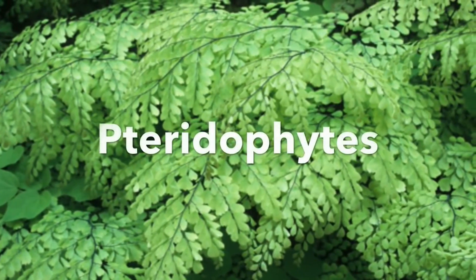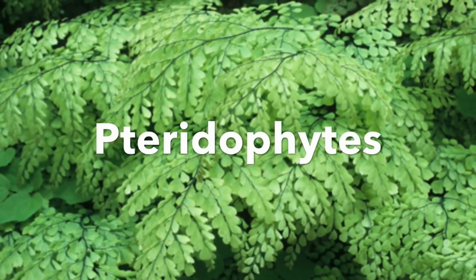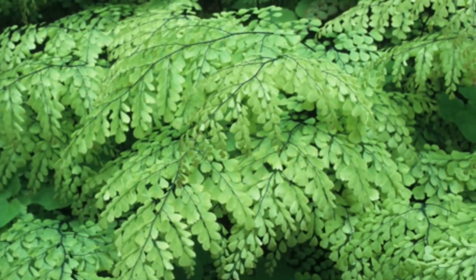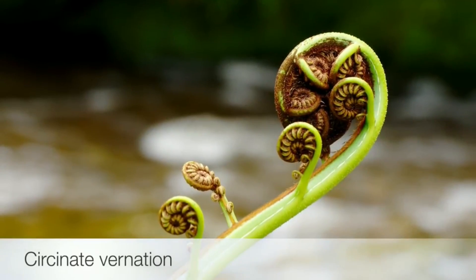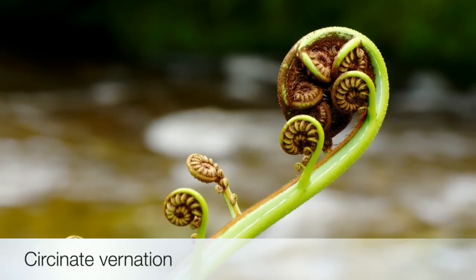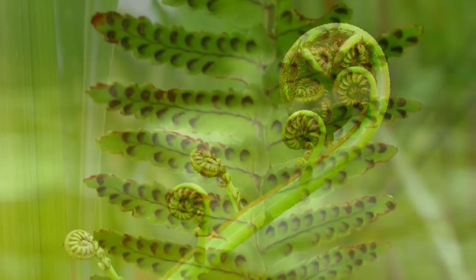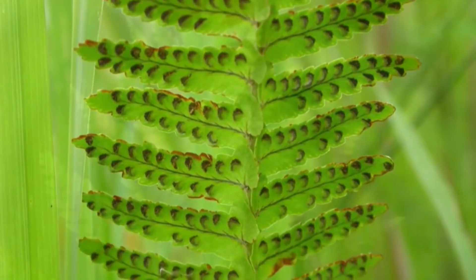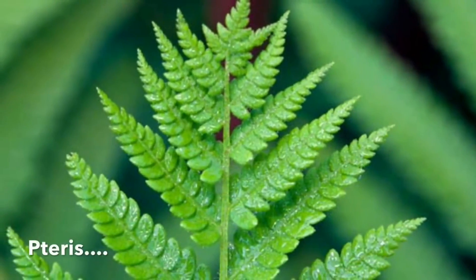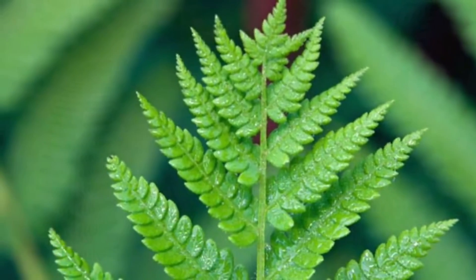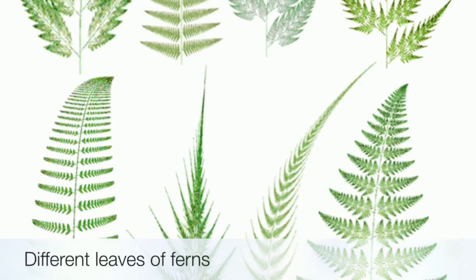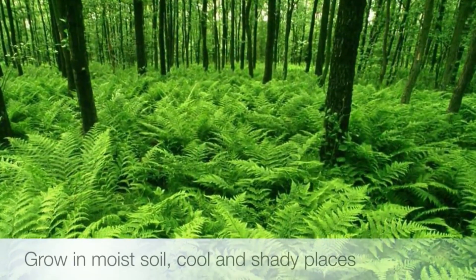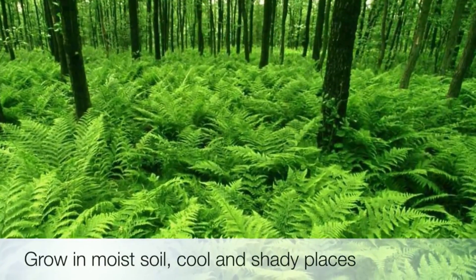The first terrestrial plants which develop vascular tissues are called pteridophytes. Pteridophytes, gymnosperms, and angiosperms are included under the tracheophytes because they have xylem and phloem. Common examples of pteridophytes include Nephrolepis, Selaginella, Adiantum, Lycopodium, and Marsilea. They are also commonly known as ferns because they grow in moist soil, cool and shady places.